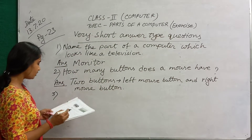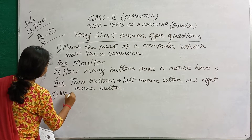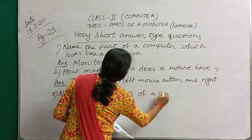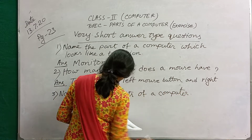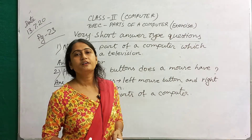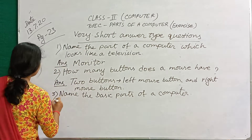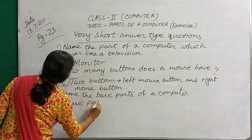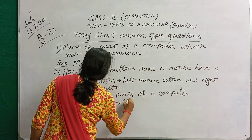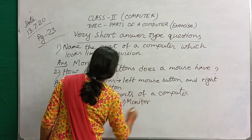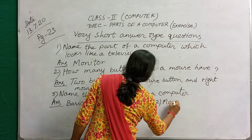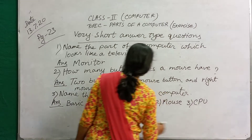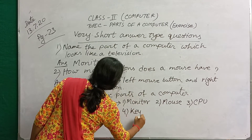Number 3: name the basic parts of a computer. The basic parts of a computer are monitor, mouse, keyboard, and CPU — central processing unit. Write the answer: number 1 monitor, number 2 mouse, number 3 CPU (central processing unit, all in capital letters), and number 4 keyboard — K-E-Y-B-O-A-R-D.